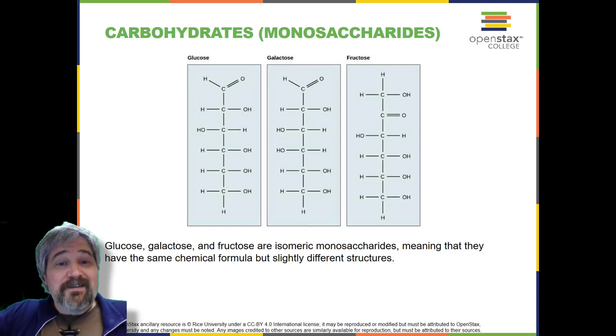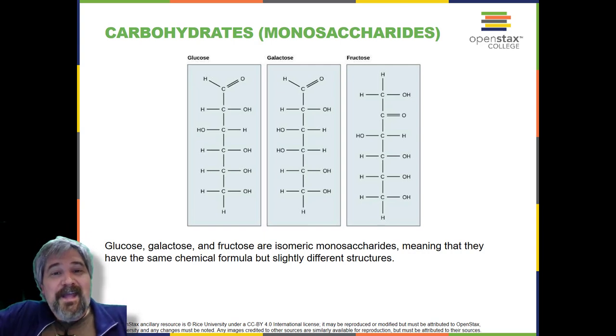Carbohydrates can be represented by the formula (CH2O)n, where N is the number of carbon atoms in the molecule. In other words, the ratio of carbon to hydrogen to oxygen is 1 to 2 to 1 in carbohydrate molecules.